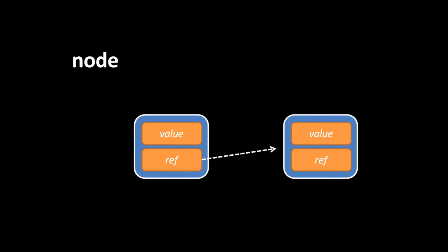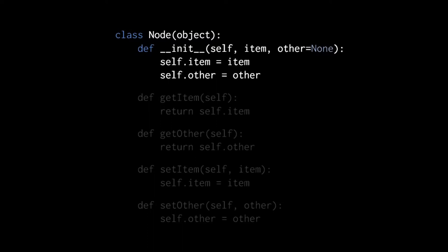How would we represent a node in code? In Python, we would create a class called Node, and have it inherit from the object class — the generic type at the top of Python's type hierarchy. In our constructor method, the object itself is passed as the first parameter, which by convention we call self. We give our constructor two other parameters: item, and an optional parameter other, which by default has the value None. In the body of the constructor, we give the node object two attributes — item and other — assigning them the values passed to those parameters. The item attribute is the value of the node, whereas other is a reference pointing to some other node. By default, it's None, so a node starts out not pointing to any other node.